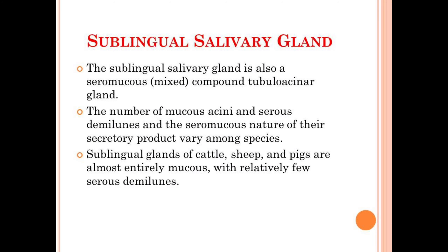Now the another type of salivary gland is the sublingual salivary gland. It is also a seromucous compound tubular acinar gland, similar to the mandibular salivary gland. Another characteristic is that the number of mucus acini, serous demilunes, and the seromucous nature of the secretory product vary among different species. For example, the sublingual glands of cattle, sheep, and pigs are almost entirely mucous with relatively few serous demilunes.